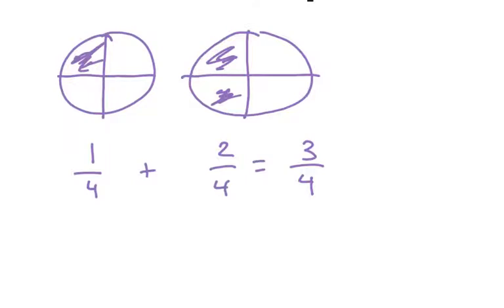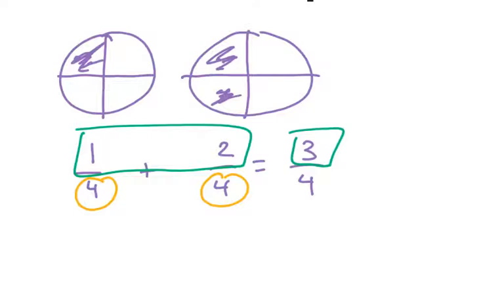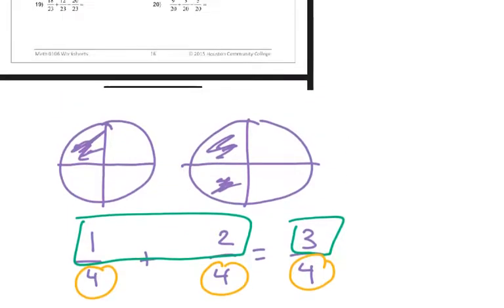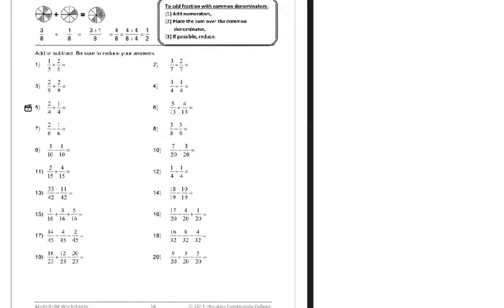When the denominators are the same, this is why what we say is we add the numerators. The numerators are being added - one plus two is three - but the denominator stays the same. I would stress: don't memorize random rules, try to understand why that's the case. The instructions say add the numerator, place the sum over the common denominator, and if possible, reduce. My advice is to understand why that is the case.